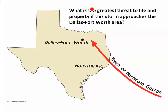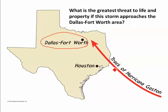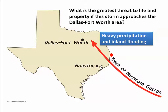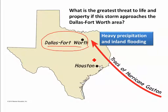What's the greatest threat to life and property if the storm approaches the Dallas-Fort Worth area? They're not on the coast, so they won't get the storm surge. By the time the storm has moved over land, its winds will have dissipated due to frictional influence — there's greater resistance over land than over water. What we'd expect to see is really heavy precipitation and inland flooding, and that is the biggest threat to life and property as the storm moves inland and hits the Dallas-Fort Worth area.